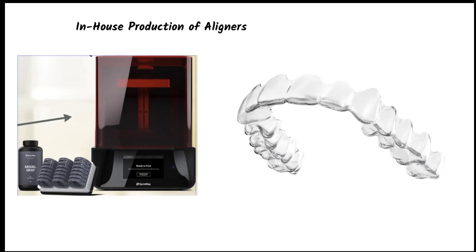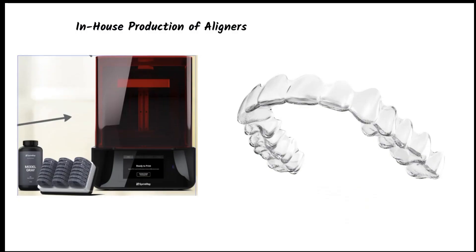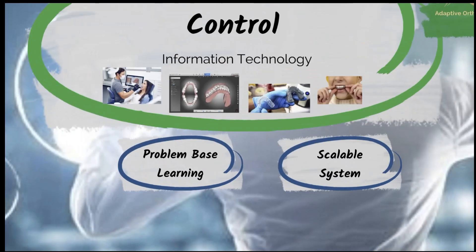In-house production of aligners is financially rewarding. You will be surprised by how little you will need to invest financially to start the in-house aligner manufacturing process. AOS implements a tried and tested pragmatic process that is very cost-effective. Having in-house capabilities facilitates greater control over the treatment as it is highly responsive — you can turn around and reprint an aligner in less than two hours if necessary.